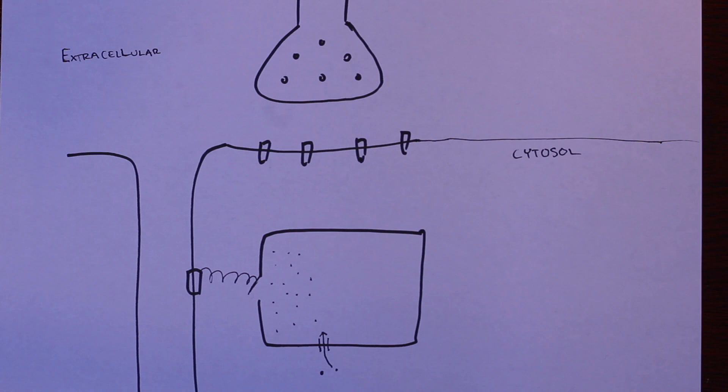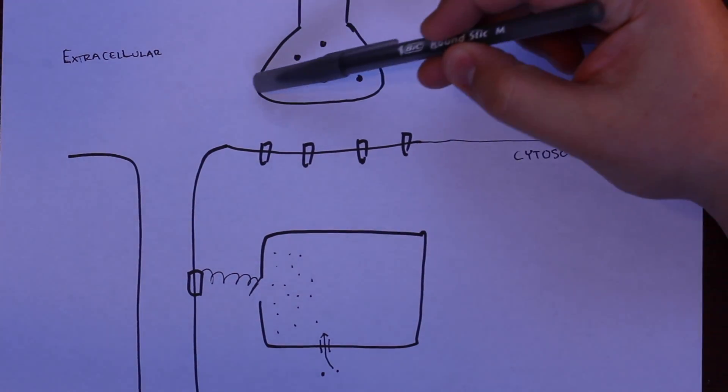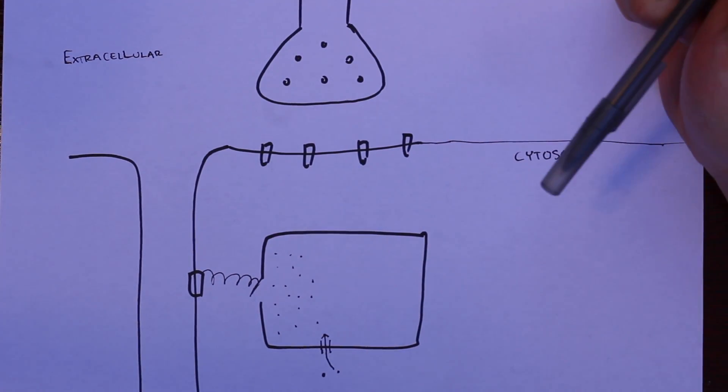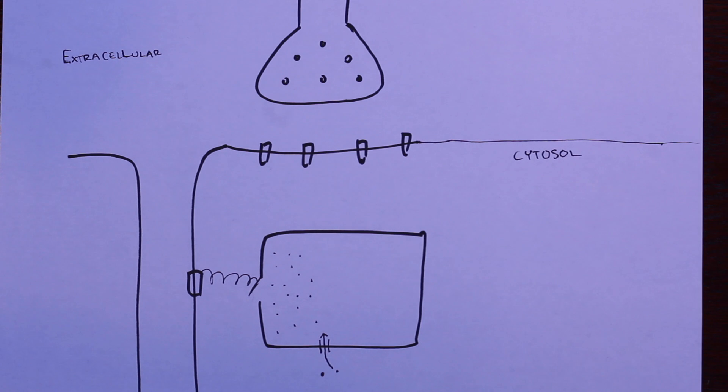We're going to take what we saw in that last picture and draw it out here. Hopefully this looks familiar from last video and you remember some of the components. Here's the synapse between the neuron and the muscle.